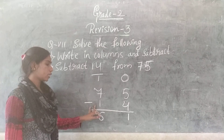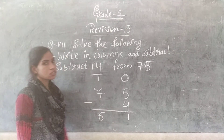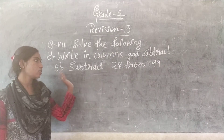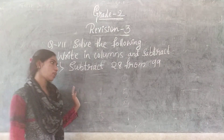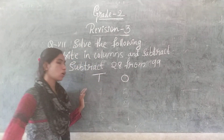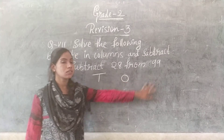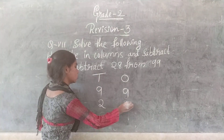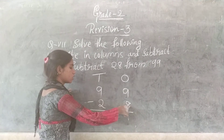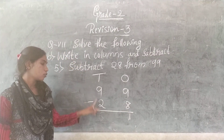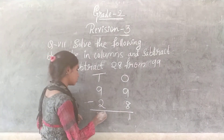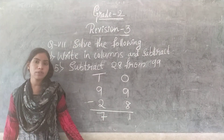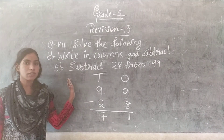The last one is subtract 28 from 99. Write 99, then write 28 below. Subtract: 9 minus 8 is 1, and 9 minus 2 is 7. The answer is 71. Practice and we will do division practice in your home and continue in the next class.